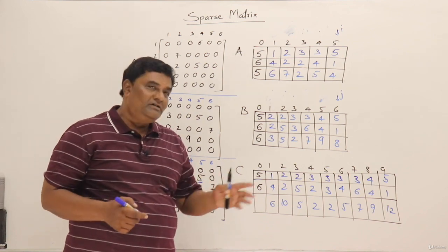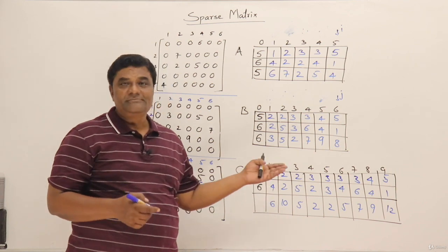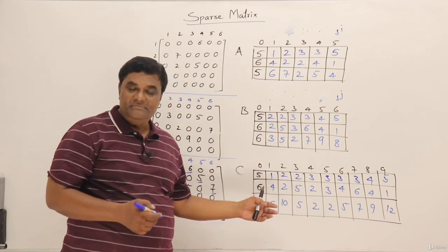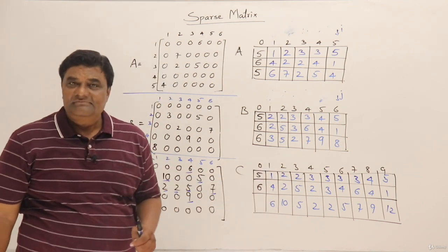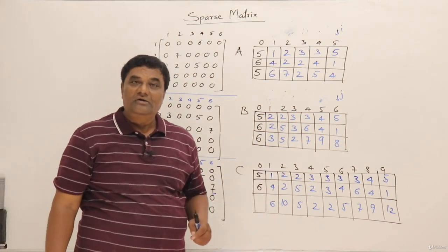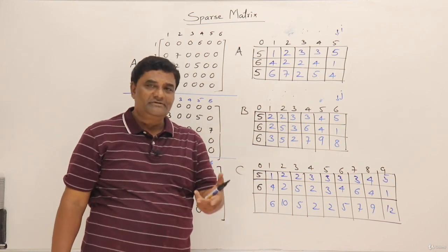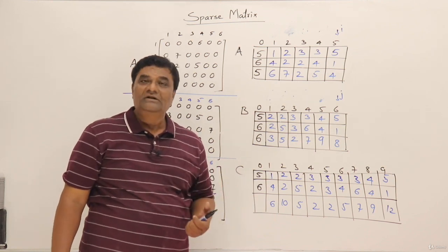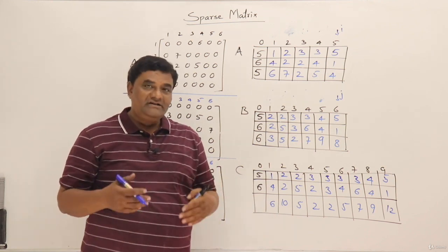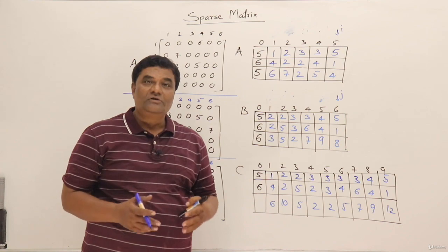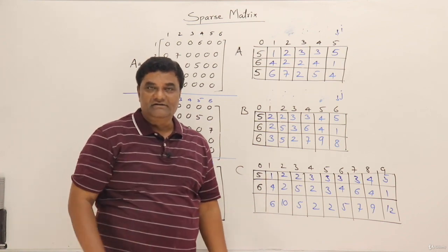So that is how we add by scanning through array A and array B: if rows are matching, check the column; if both match, add them. If a row is smaller, directly copy it. If a column is smaller, directly copy it. That's all about sparse matrix addition. Similarly you can do subtraction. How it can be done through a program, I will show you next.